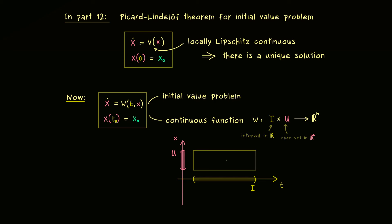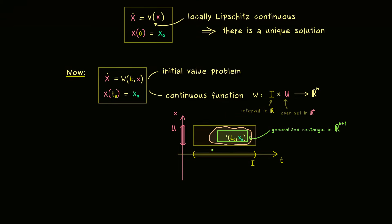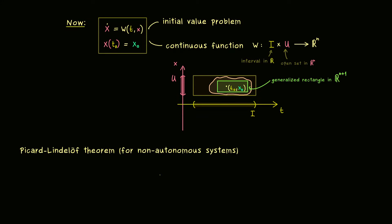We are only interested in what happens around the point (t0, x0), which is exactly where the initial value problem starts. We can always find an open set in R^(n+1) around this given point, and therefore we can also find a generalized rectangle that lies completely inside this open set. So just by zooming in, everything gets much simpler. Often you see the Picard-Lindelöf theorem described with such a generalized rectangle — it's not a restriction at all, just a local description.